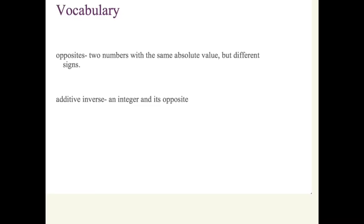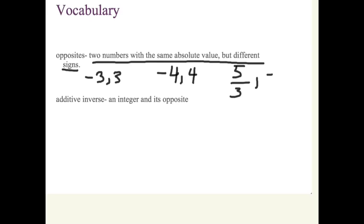The following terminology: opposites and additive inverse. You guys have heard of and seen this before, but let's just talk about it specifically. So when we're looking at opposites, we're talking about two numbers with the same absolute value but different signs. So that would mean that negative 3 and 3 are considered opposites. Negative 4 and 4, 5 thirds and negative 5 thirds are all opposites.